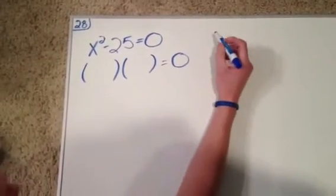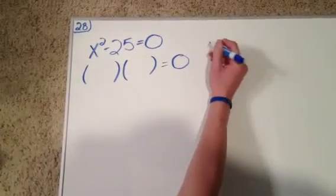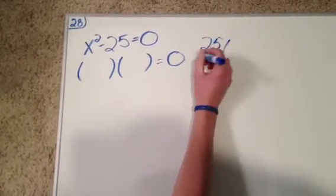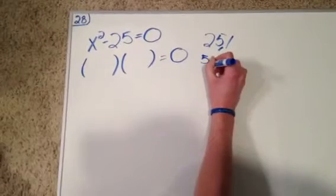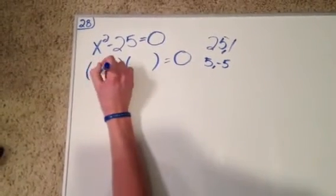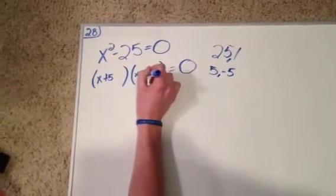Our factors that multiply to negative 25 and don't leave us any x's are 25 and 1, and 5 and negative 5. 5 and negative 5 work, so we have x plus 5, x minus 5.